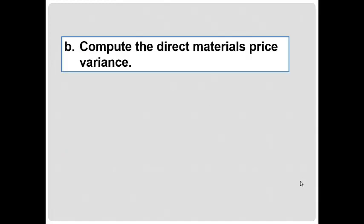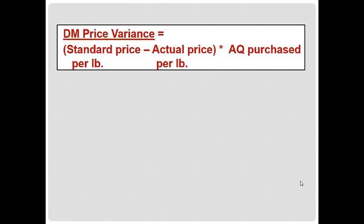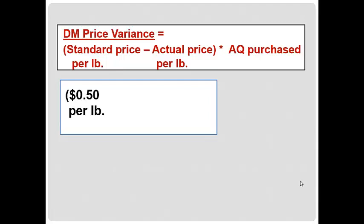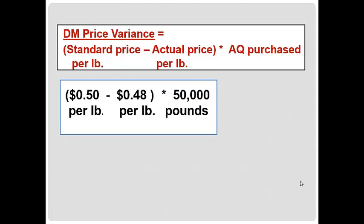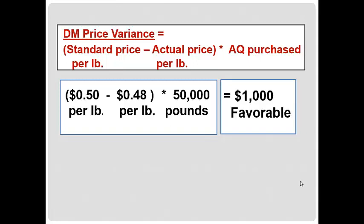Compute the direct materials price variance. The formula is: in parentheses, standard price per pound minus actual price per pound — isolating the difference in price paid — then multiplied by the actual quantity purchased. Our standard price per pound is 50 cents. We actually paid 48 cents per pound, and we purchased 50,000 pounds. Notice we use quantity purchased of 50,000 rather than quantity used of 46,000. This gives us a $1,000 variance, and it is favorable — we paid less than the standard allowed. So both the direct material usage variance and the direct material price variance are $1,000 favorable.